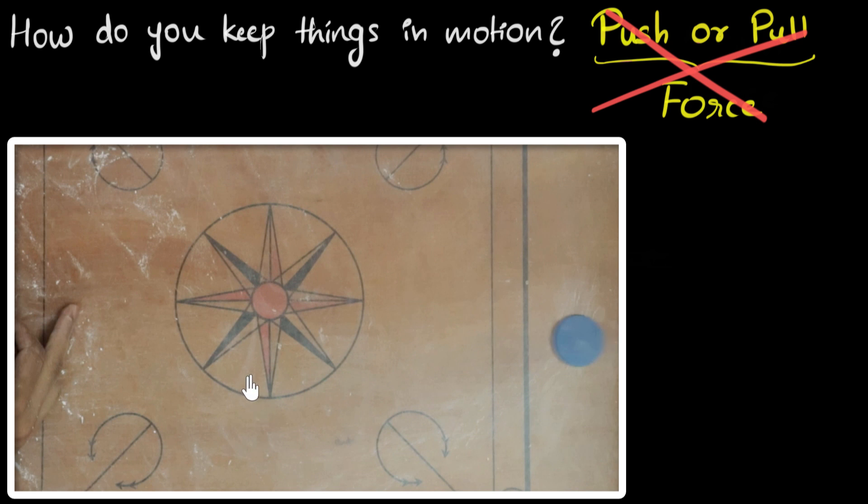So this means, logically, as I make the surface smoother and smoother, our coin will travel farther and farther before stopping, given that our carom board is big enough.